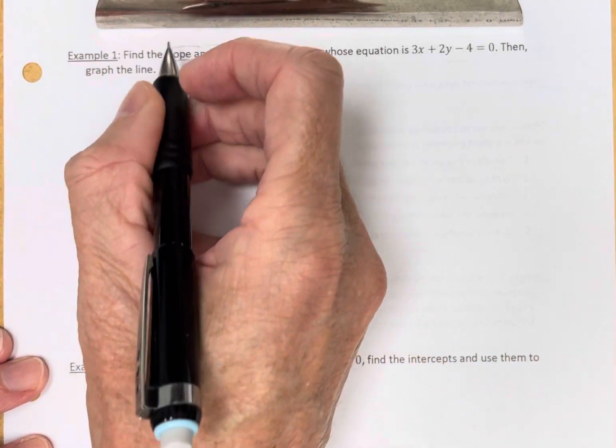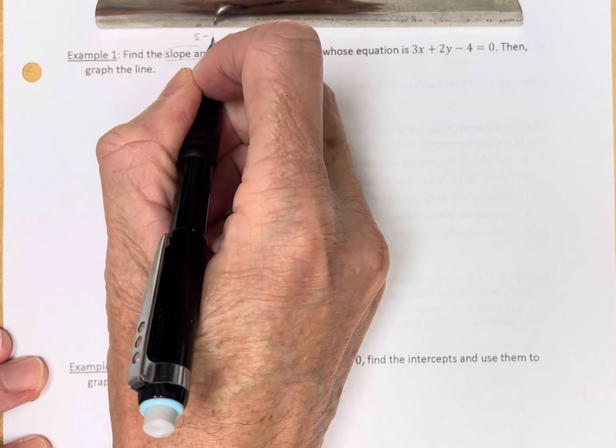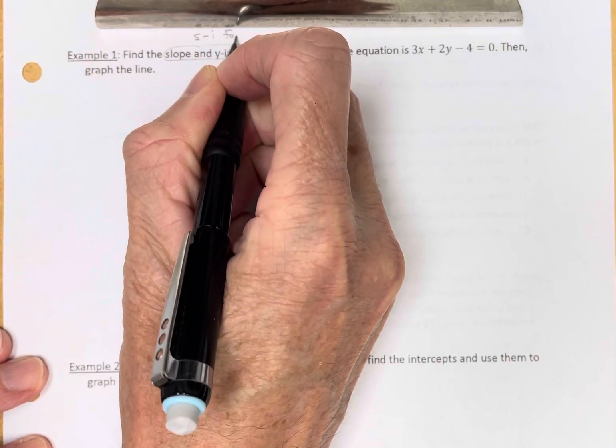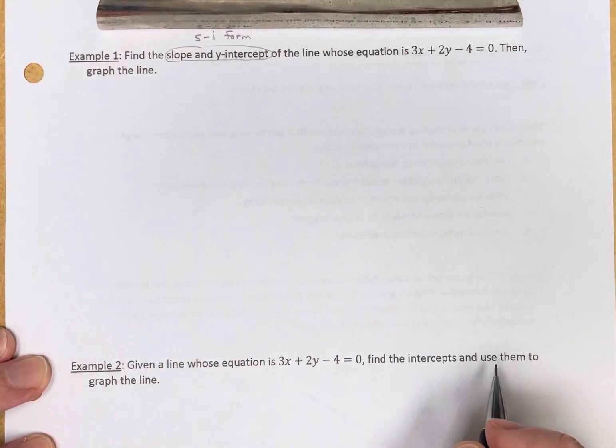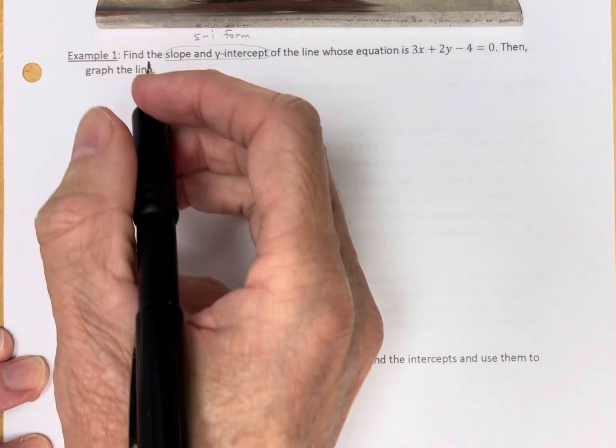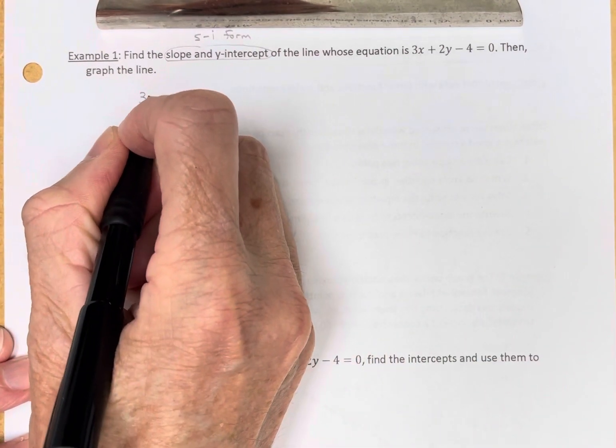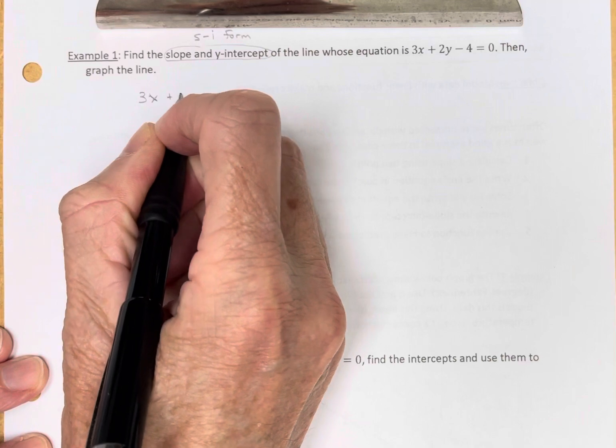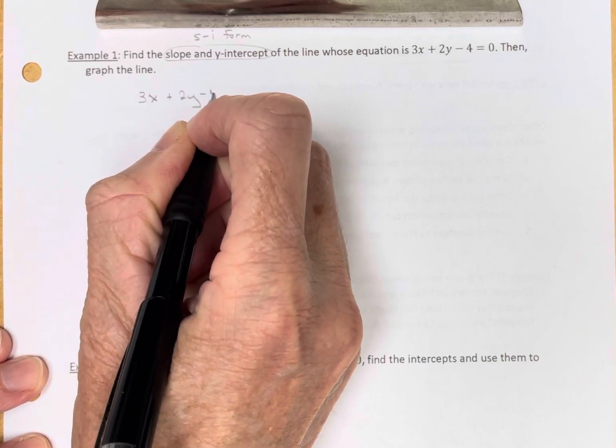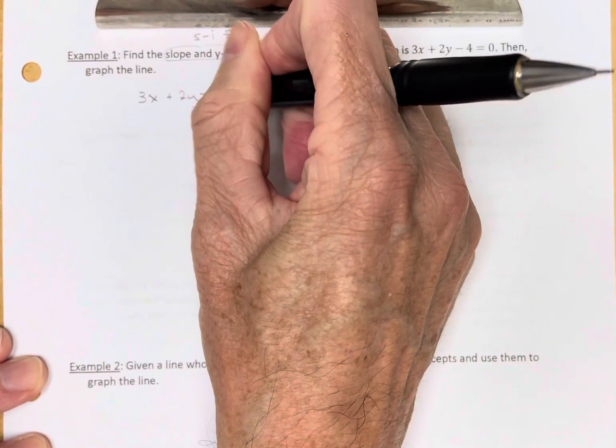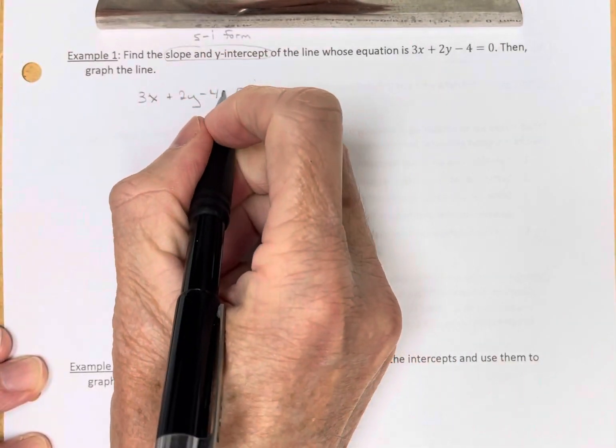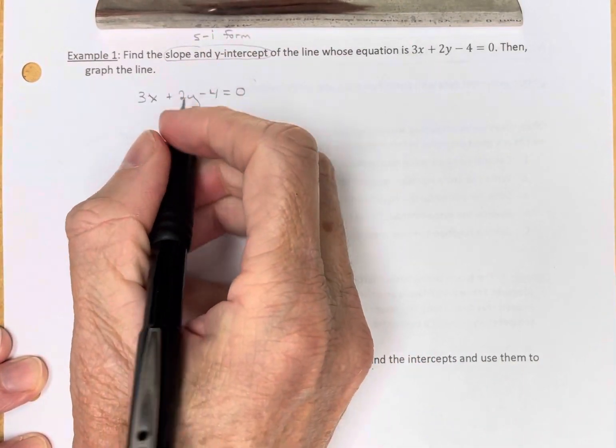Which means I'm looking for the slope-intercept form, which is the solve-for-y form. So let's start here with the general form 3x plus 2y minus 4 equals 0, and let's solve for y.